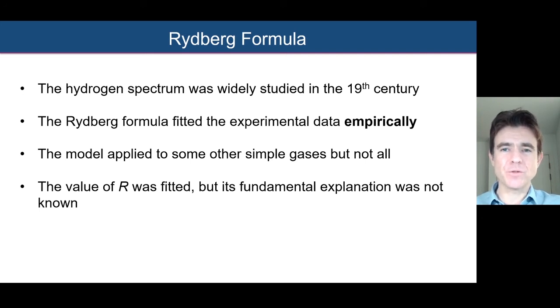But it just didn't give any physical meaning behind these line spectra. So the value of R, the Rydberg constant, was fitted, but its fundamental explanation was not known. And this really now opened the door for a very remarkable model that was put forward for the atom by Niels Bohr. And we'll consider the Bohr model of the atom in the next video. And it remarkably can come up with a value for the Rydberg constant that very much fits the empirical data with remarkable precision and accuracy. So I look forward to seeing you in the next video where we'll get on to the Bohr model of the atom. Thank you.